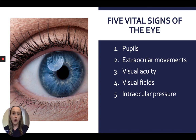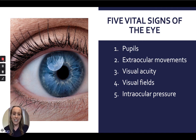To summarize, the five vital signs of the eye are: pupils, extraocular movements, visual acuity, visual fields, and intraocular pressure. These are important things to have memorized. I hope you're looking forward to eye day — I know I am, and I will see you all then.